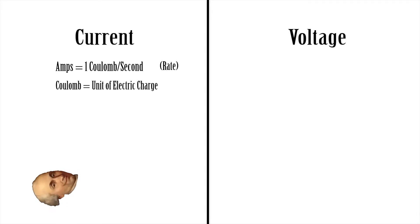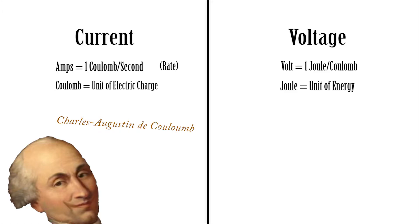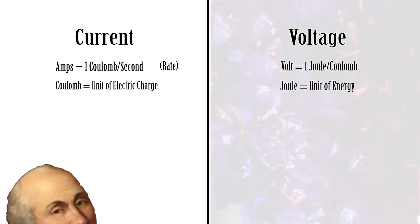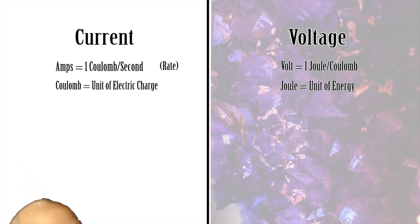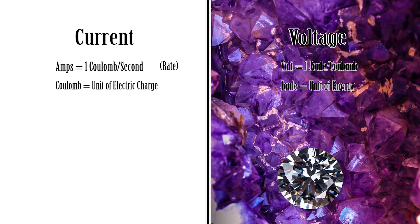Amps are a coulomb per second, so current is a rate — it's a coulomb for every second. How many coulombs per second go by. Voltage, on the other hand, is a joule per coulomb. It's an energy per unit charge, because a joule is a measure of energy. So a volt is a joule per coulomb.